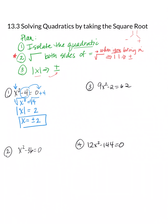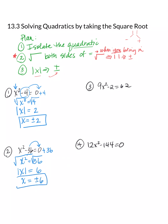Number two: x squared minus 36. Move the constant over — x squared equals 36. Bring in the square root; taking an odd amount out of an even root means absolute value bars. Square root of 36 is 6. Drop the absolute value bars by rewriting as plus or minus 6. There are the two solutions — degree 2, so we're good.